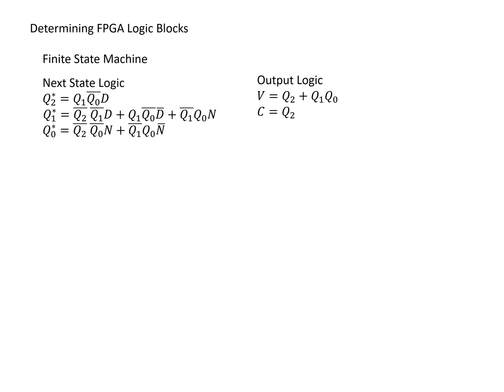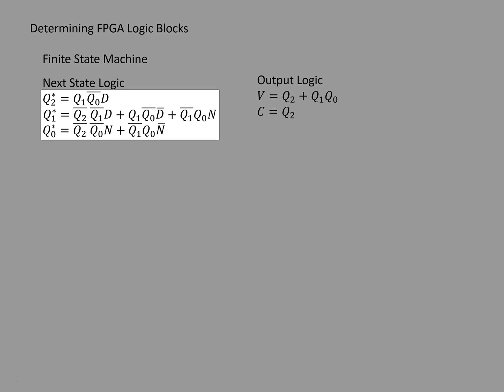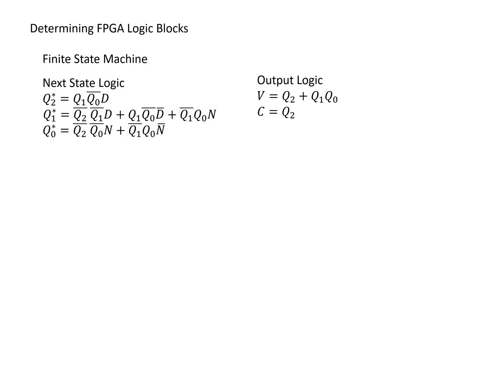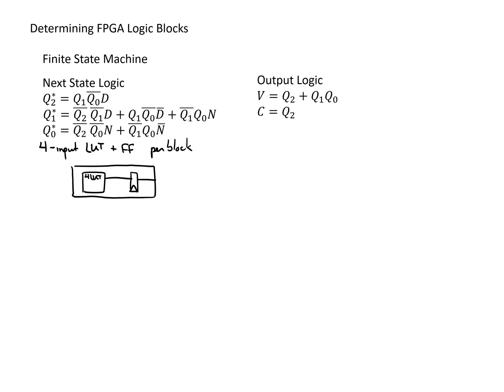For this example, we're going to look at implementing a finite state machine in an FPGA and determining how many logic blocks we need. This FSM has three state bits, and the next state logic for each of those bits is shown on the left. We have two outputs shown by the equations on the right. We're interested in how many logic blocks with four-input lookup tables plus a single flip-flop we need. In each logic block, we have a four-input lookup table, an optional flip-flop to feed the value into, and we decide what inputs to connect and what to assign the output to.